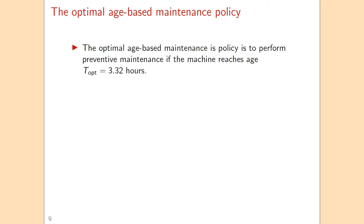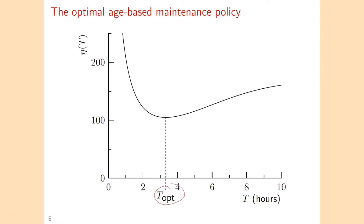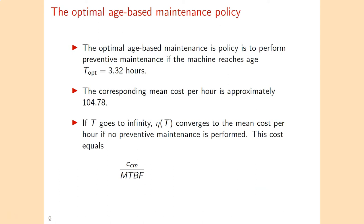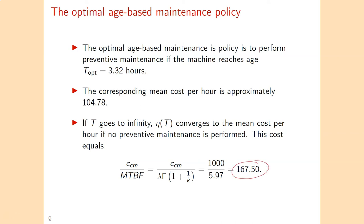The exact optimal maintenance age is 3.32 hours, with a corresponding mean cost per hour of 105. The graph also shows that the cost rate converges to a certain value as the maintenance age increases, which represents the cost of doing no preventive maintenance at all. That cost equals the corrective maintenance cost divided by the mean time between failures. In this case that cost is 167.5, which is the cost of a pure corrective maintenance strategy. Going from the pure corrective maintenance strategy to the optimal age-based maintenance policy reduces costs from 168 to 105, demonstrating the benefit of using the optimal age-based maintenance policy.